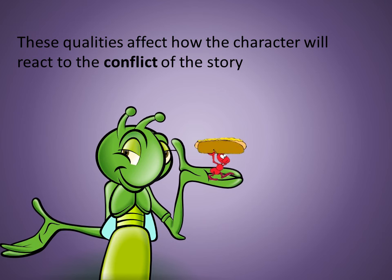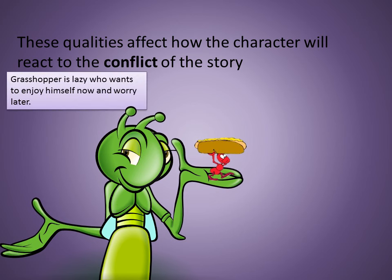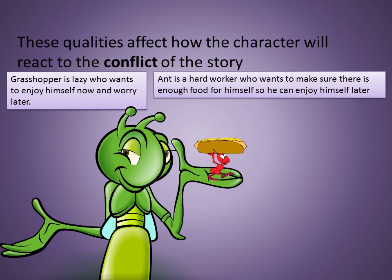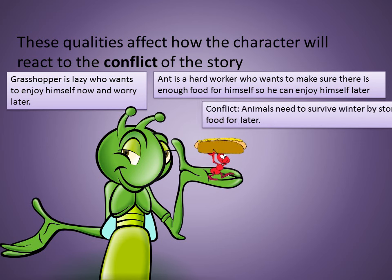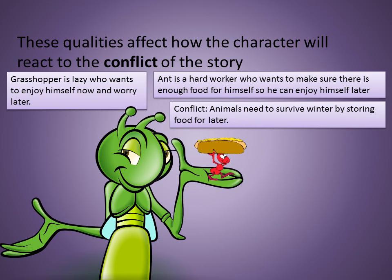They're two different characters reacting to the same conflict differently. The grasshopper is lazy and wants to enjoy himself now and worry about things later. The ant is a hard worker who wants to make sure there is enough food for himself so he can enjoy himself later. The problem is that both animals need to survive the winter by storing food.